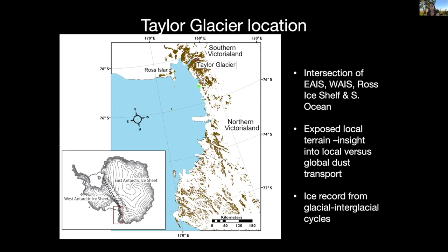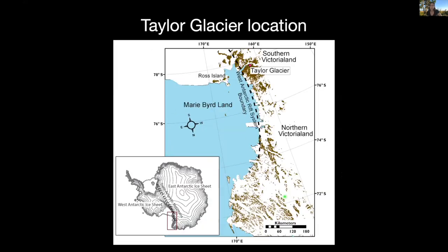Importantly, Taylor Glacier has an ice record that goes back multiple glacial and interglacial cycles. It's also located really close to the West Antarctic rift system boundary, shown as this dashed black line — an approximate location. West Antarctica is a prominent volcanic region, so to the left of this rift system boundary you'll have young volcanic material, and to the right older crustal material that looks different geochemically.